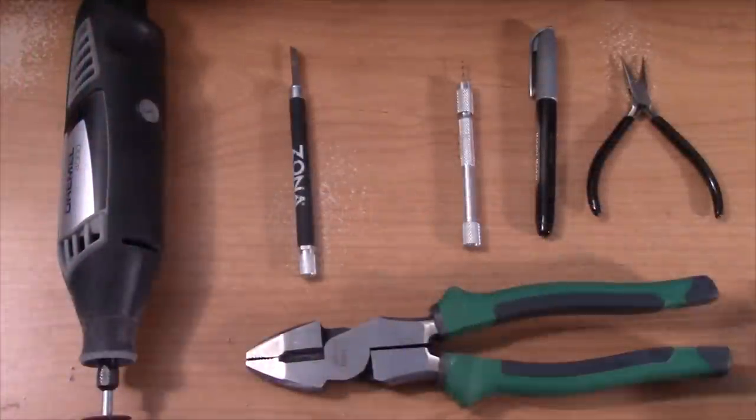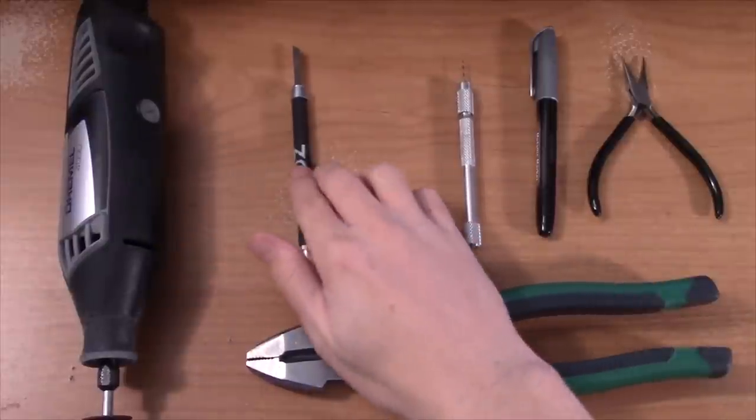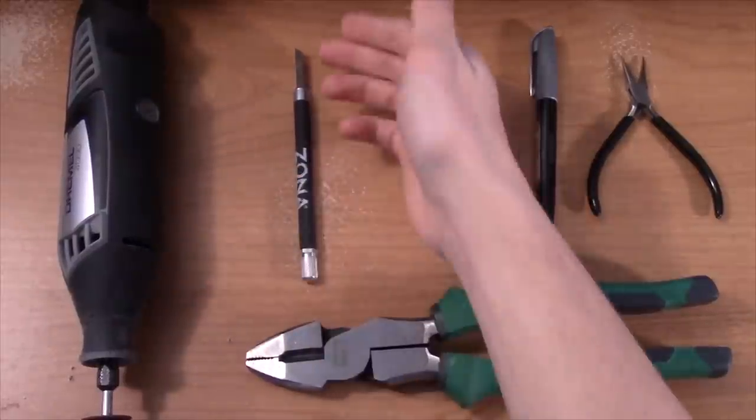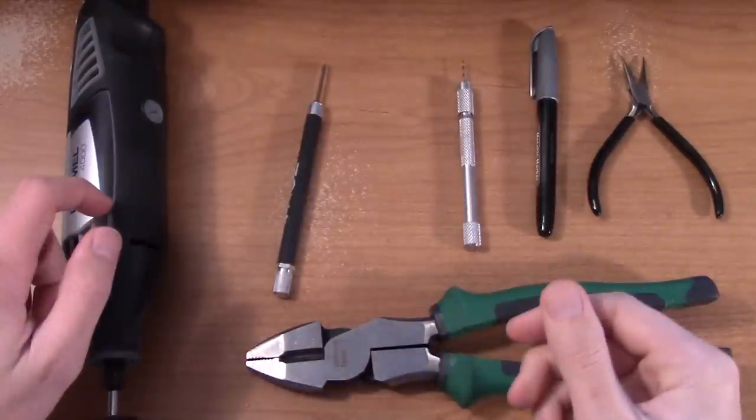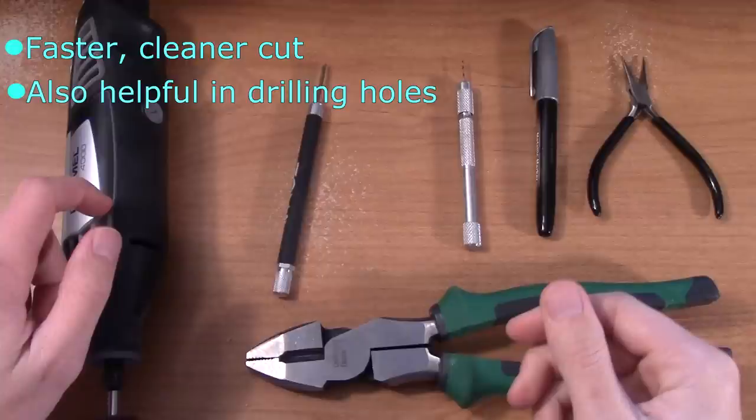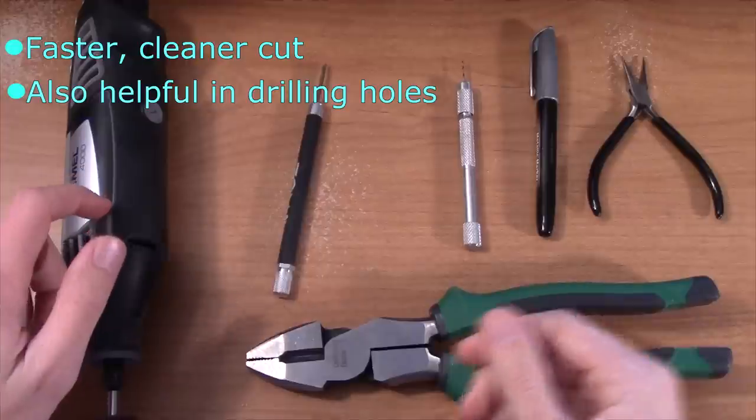Let's take a look at the tools we're going to need for this project. To cut our carbon fiber rod, we'll need either a hobby knife with a saw blade on it or a dremel with a cutting wheel. The dremel is highly preferred because it gives a faster, cleaner cut and it will help us out later on in the project.